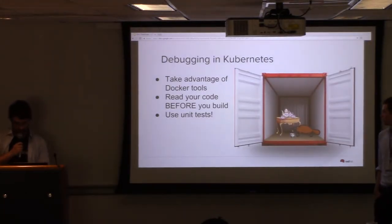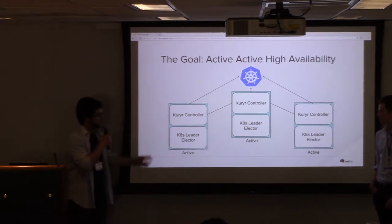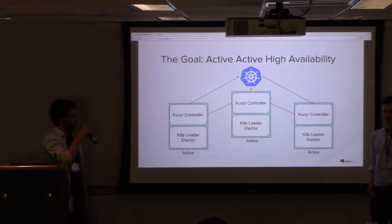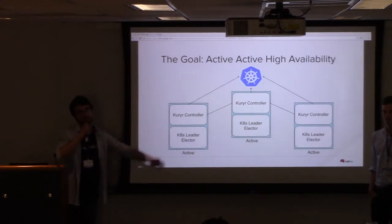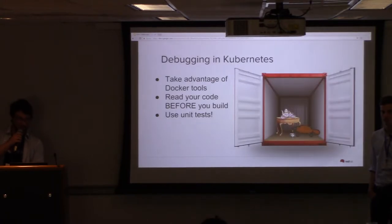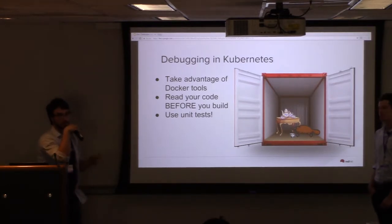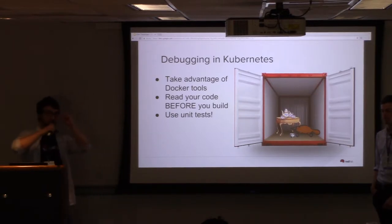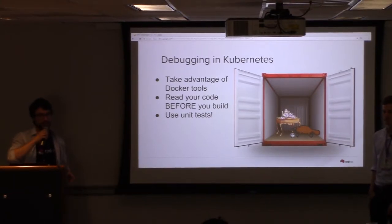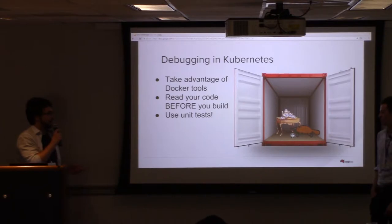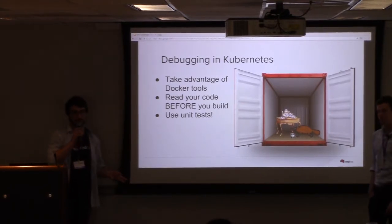In order to run in high availability mode, you actually have to run in Kubernetes, so you have to run the Kuryr controller in its own pod composed of two different containers. That's where you start running into fun stuff with Kubernetes. Because there are two containers running in your pod, debugging becomes an interesting situation. Building a container is not the fastest process, so don't make the mistake I did — be vigorous and test your code before you build, because it will slow down your development cycle a ton.